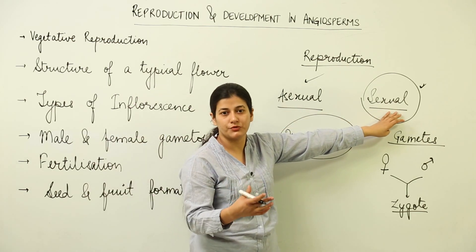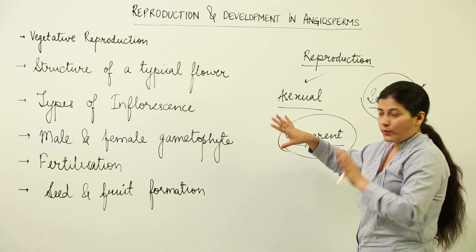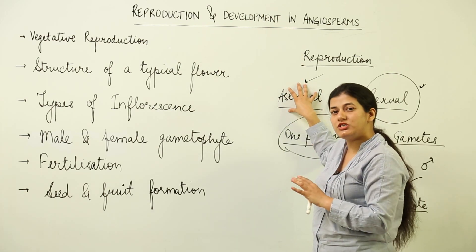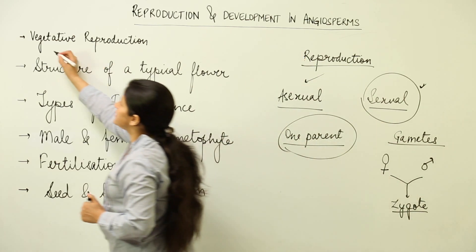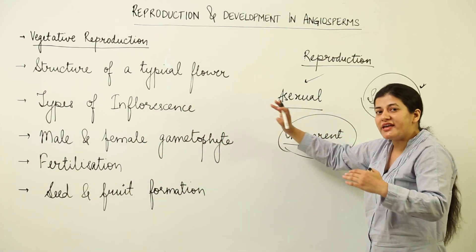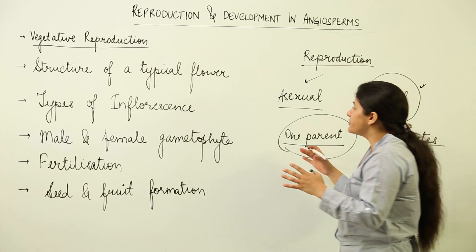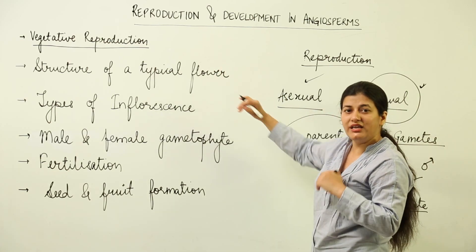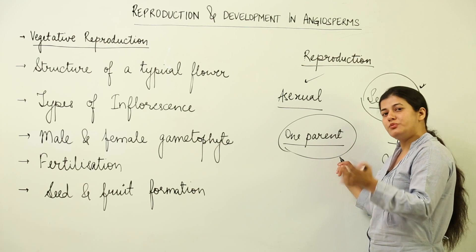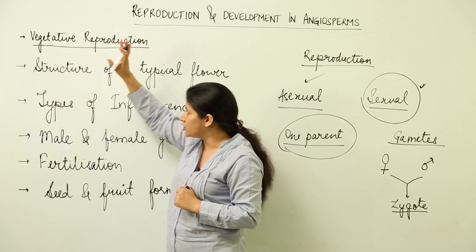How does a flowering plant reproduce asexually? The terminology for asexual reproduction in the flowering plant is vegetative reproduction. When an angiosperm reproduces asexually, its vegetative parts — stem, root, and leaves — are involved in giving rise to a new plant. A new angiosperm is born out of the vegetative parts without involving the formation of gametes. That particular aspect of reproduction is termed vegetative reproduction, and we are going to study the various methods by which the plant reproduces through it.